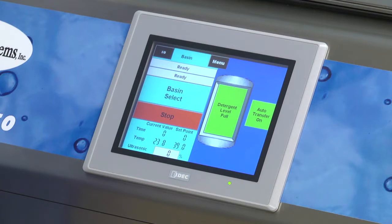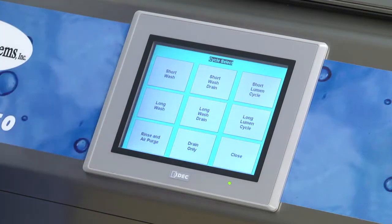From this screen, you have an Input Output button, a Menu button, Basin Select, Stop button, Time, Temperature, and Ultrasonic Percentage. Press the Basin Select button to select which kind of cycle you want to run. This brings up the Cycle Select menu.